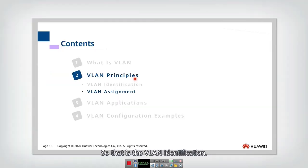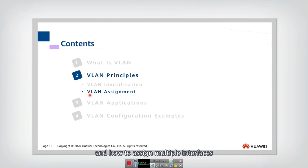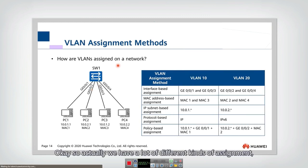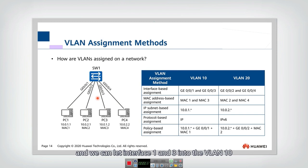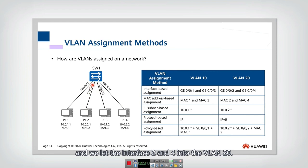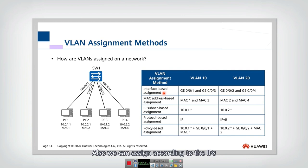Now let's look at how to assign multiple interfaces in a vSwitch to different VLANs. We have several kinds of assignment. We can assign VLANs by interface — for example, with four interfaces, we can put interfaces 1 and 3 into VLAN 10 and interfaces 2 and 4 into VLAN 20. This kind of assignment is called interface-based assignment.